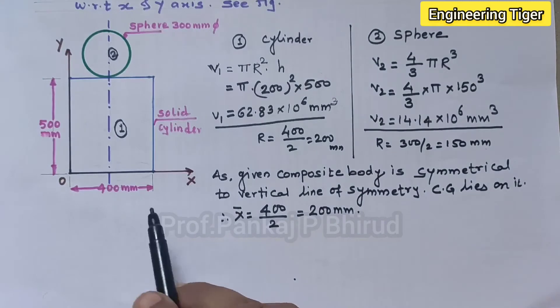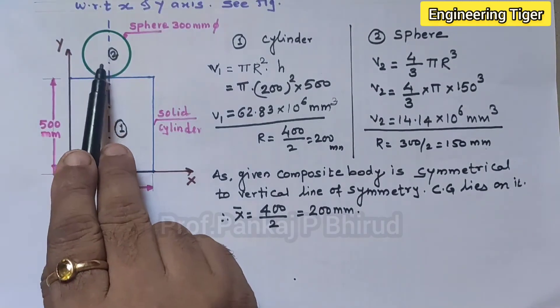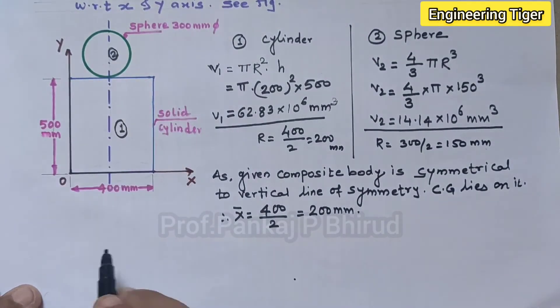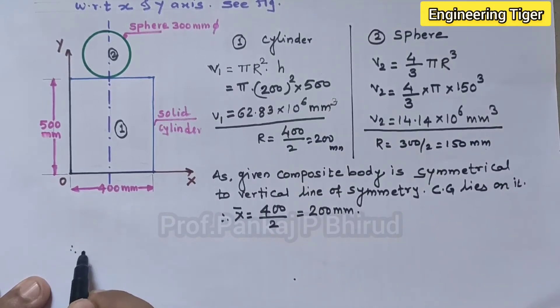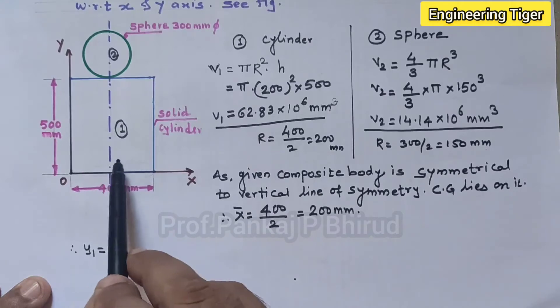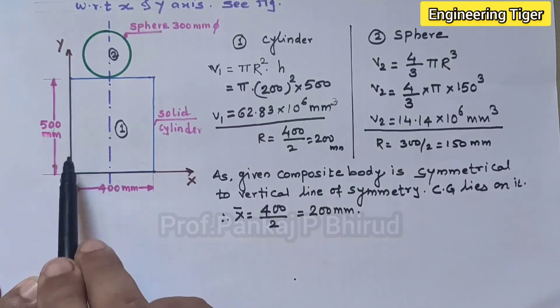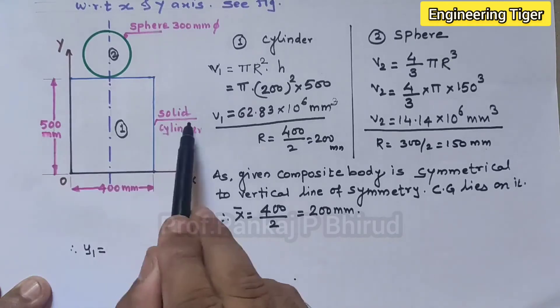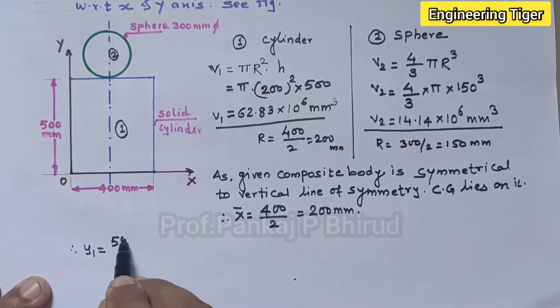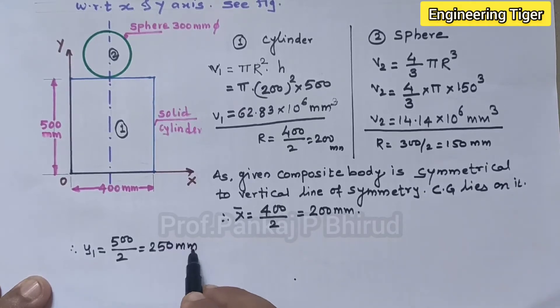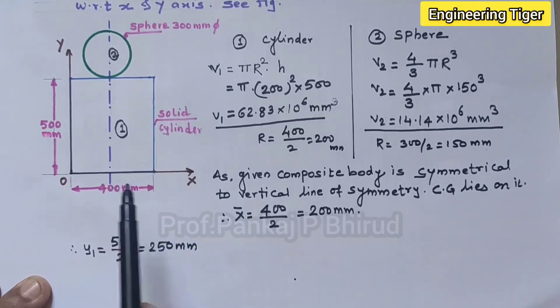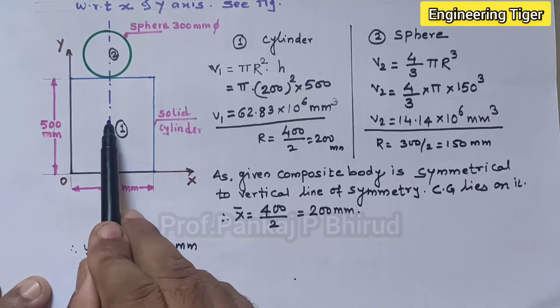So let us try to find out y1. For y1, that is center of gravity of this cylinder from x axis, this total is 500, so 500 by 2 that is 250 mm. So CG of this cylinder is at 250 mm from x axis.